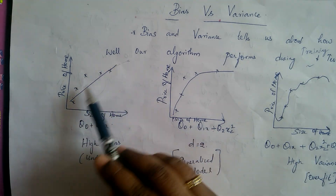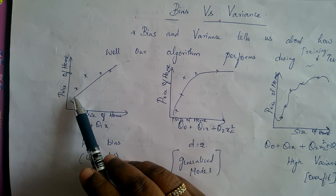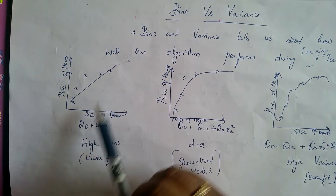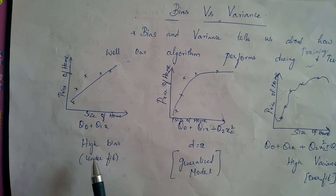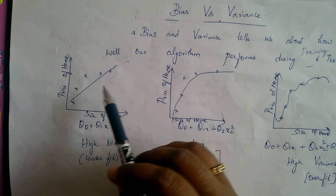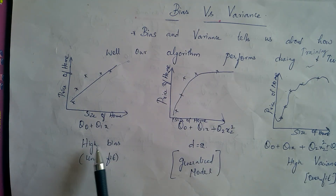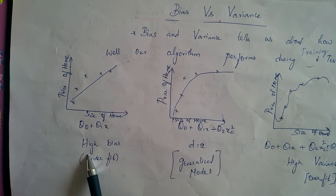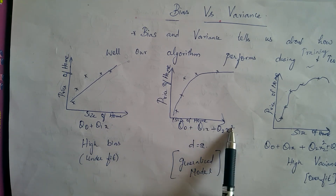Here, we have come up with a model but still were not able to fit the training data itself. Such a condition is called high bias — the model is underfit, meaning it is not able to perform well even on the training data. High bias is equivalent to an underfit model.